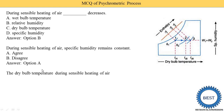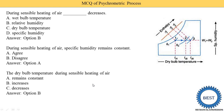The dry bulb temperature during sensible heating of air: does it remain constant, increase, or decrease? It is a heating process, so by default the dry bulb temperature is increased. As seen on the psychrometric chart, at the inlet the dry bulb temperature is Td1 and at the outlet it is Td2. Temperature increases from left to right. So option B is the correct answer: dry bulb temperature increases during sensible heating.